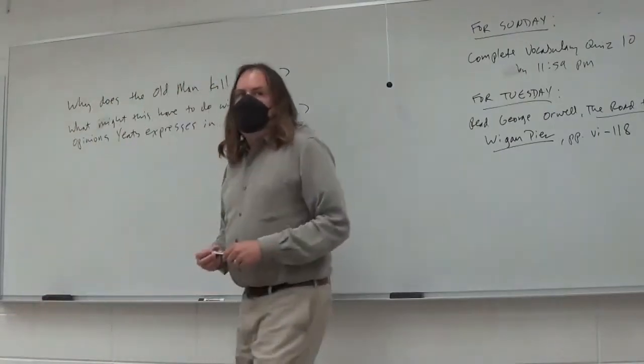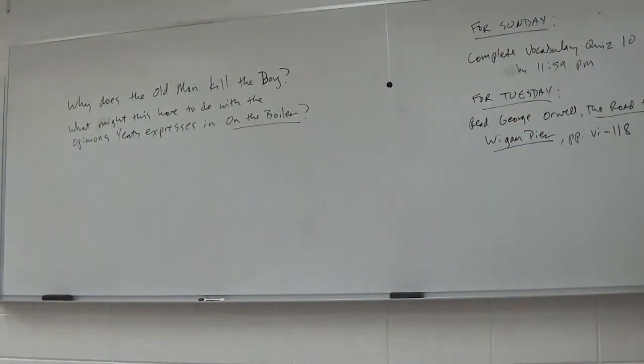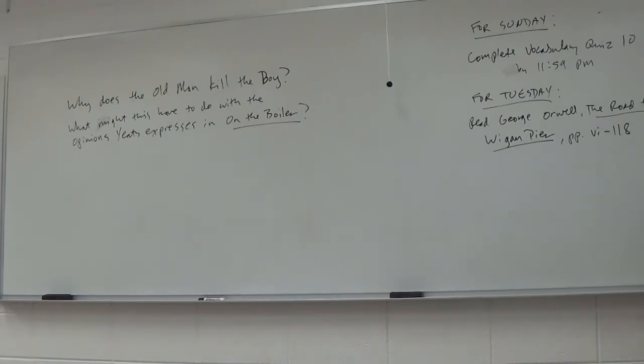Don't forget to complete the weekend vocab quiz by Sunday. For next week we're reading the first half of George Orwell's The Road to Wigan Pier. I know this sounds like a larger reading assignment than usual, but this book is easier to read than what we've been looking at. The language is less dense, it's nonfiction, and the print is quite large, so it's equivalent to maybe forty pages of somebody like Woolf.